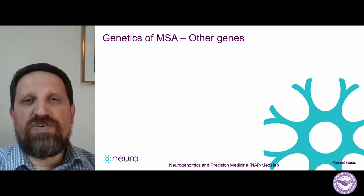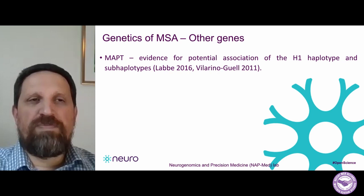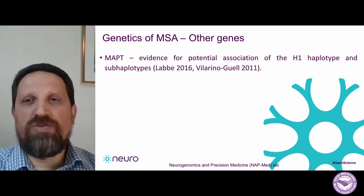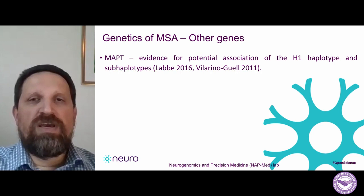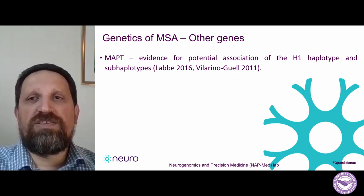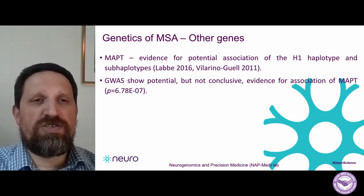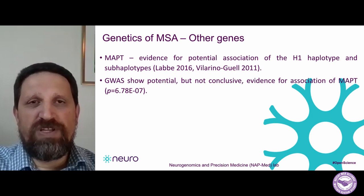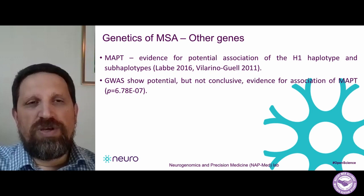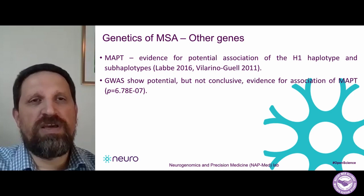Other genes have also been suggested to be involved in MSA. One of them is a gene called MAPT. This gene encodes a protein called tau, which accumulates in different neurodegenerative diseases, making it a very interesting gene to look at. There have been a few studies suggesting that a variant in this gene — called the H1 haplotype — is associated with risk of MSA. Interestingly, the genome-wide association study showed some evidence, though not conclusive, that this gene might also be associated with MSA.